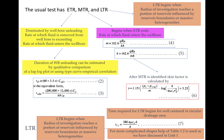The duration of wellbore unloading can be estimated qualitatively by a log-log plot and using type curve empirical correlations. Different type curves are well utilized for estimating the wellbore domination effect and the middle time region. The late time region begins when the radius of investigation reaches a portion of the reservoir influenced by reservoir boundaries or massive heterogeneities. This late time region can be easily demarcated once we have the pressure drawdown data plotted on different type of graphs.